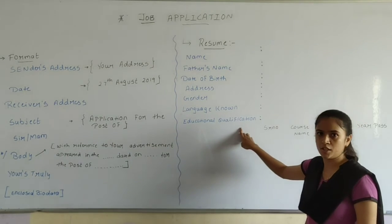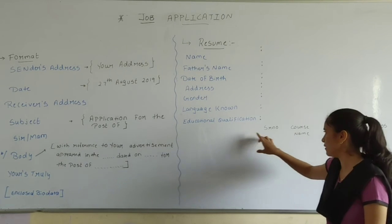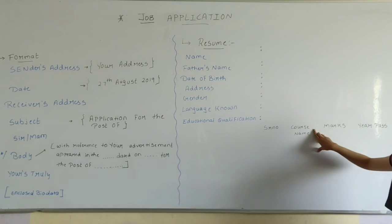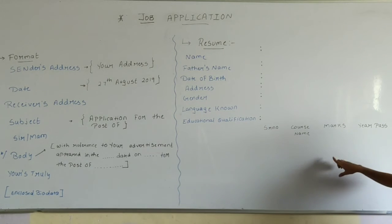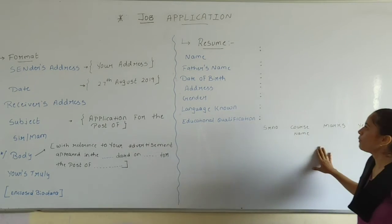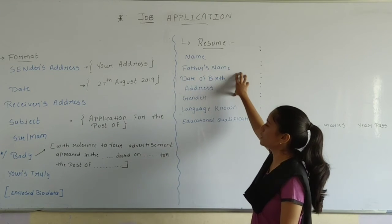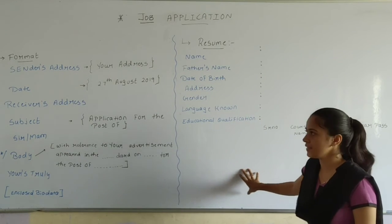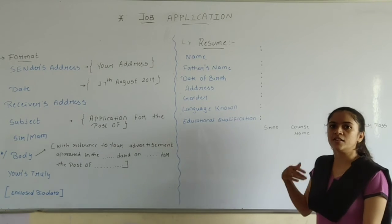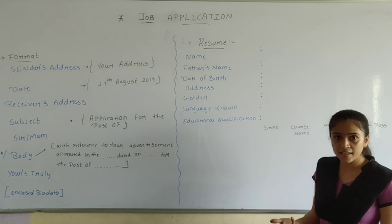Educational qualifications — how do you present your educational qualifications? In a numbered list: one, two, three — the course which you have done, marks, and the year of passing. Additionally, you can also mention your marital status, nationality, skills, etc.